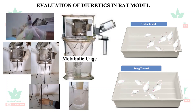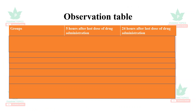We collect the urine at different time intervals and collect the total volume over 24 hours. Here is the observation table: urine is collected 5 hours after the last dose of drug administration.